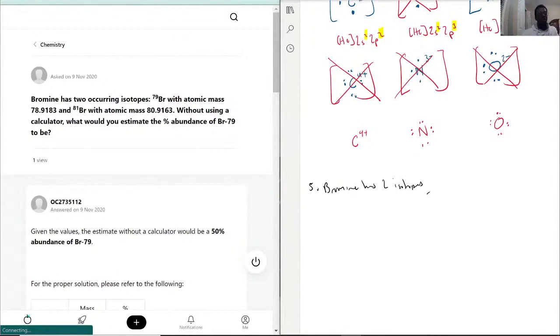One of them, Br-79, has an atomic mass of 78.9183, and the other, Br-81, has a mass of 80.9163.